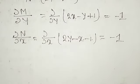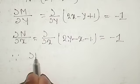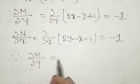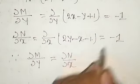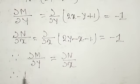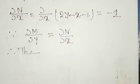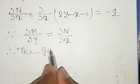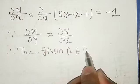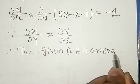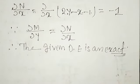Now we check whether it is exact. Since ∂M/∂y = ∂N/∂x — both values are −1 — therefore the given differential equation is exact. After checking the exactness, we will find the general solution.